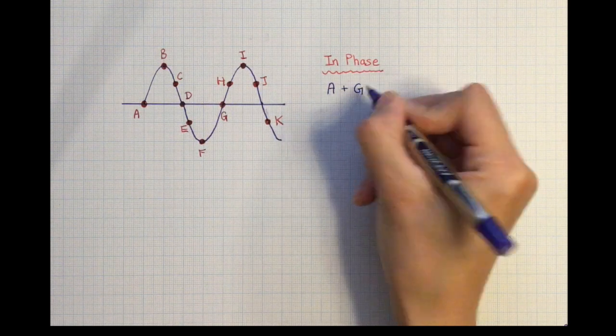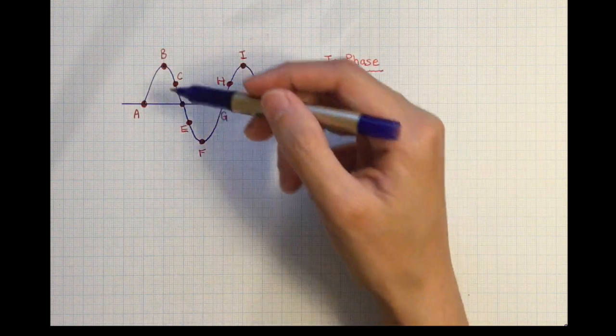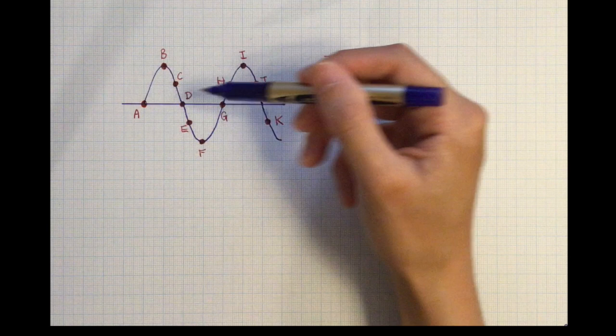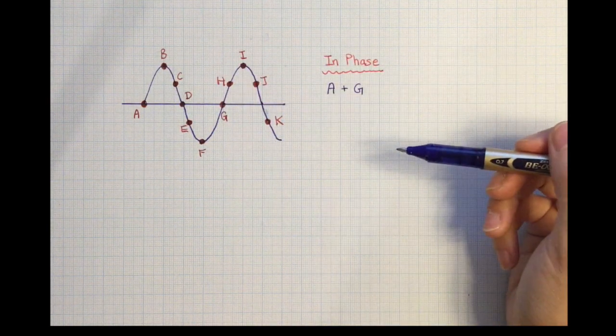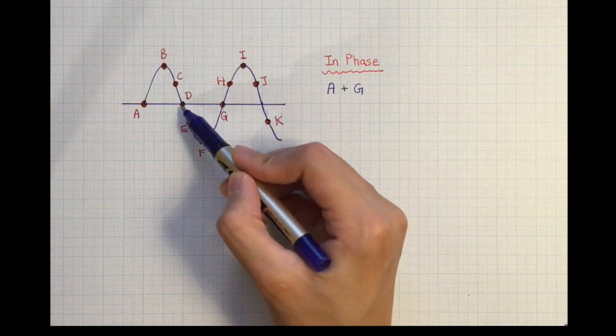The reason why A is not in phase with D, even though they are both on the equilibrium, is because A is moving upwards while D is moving downwards.